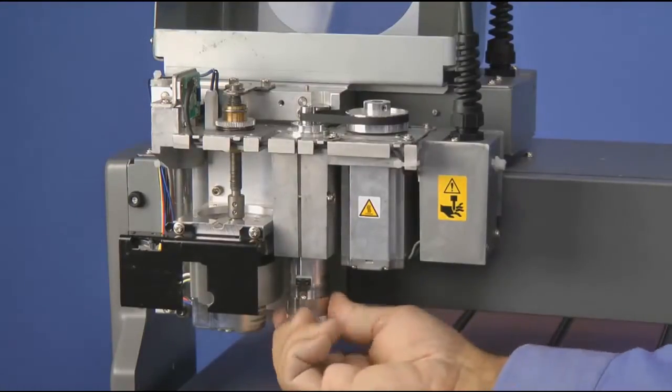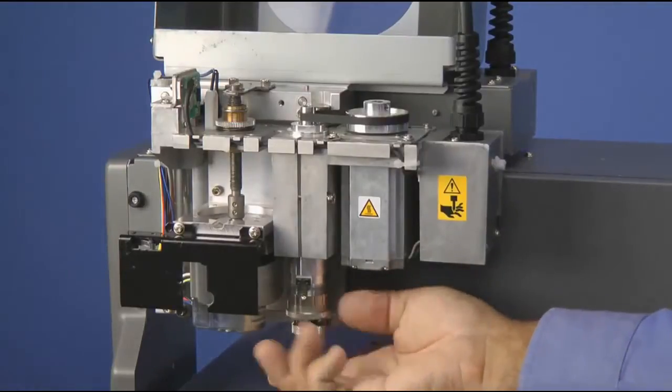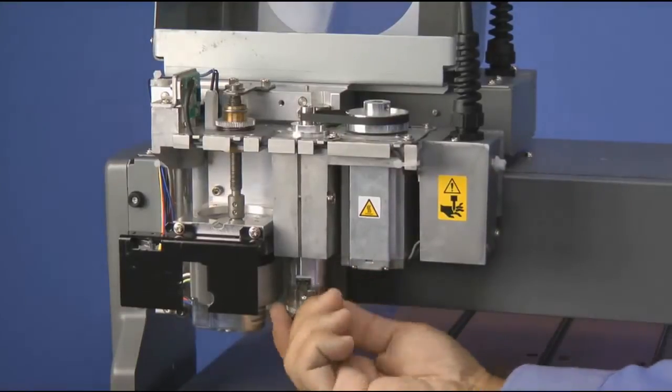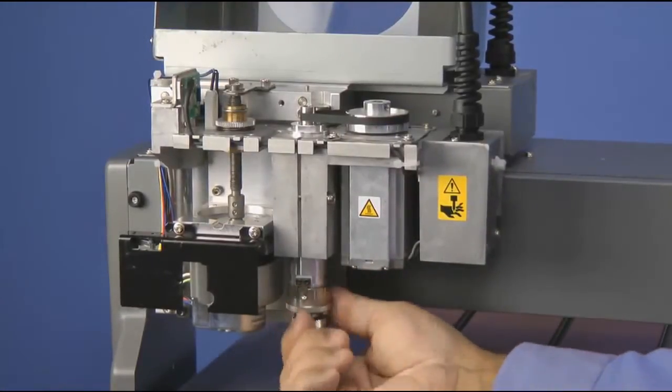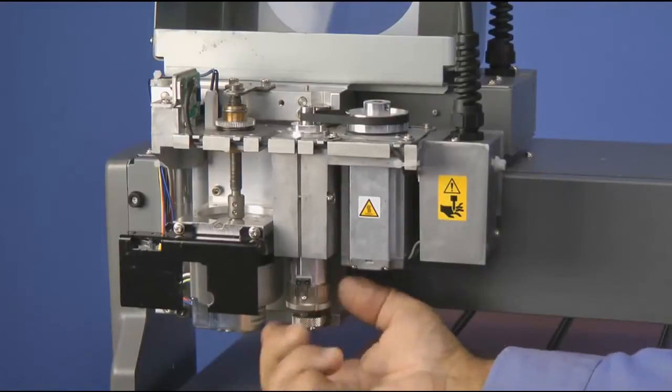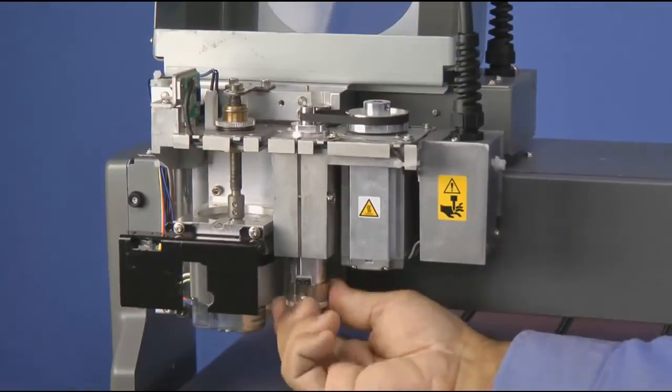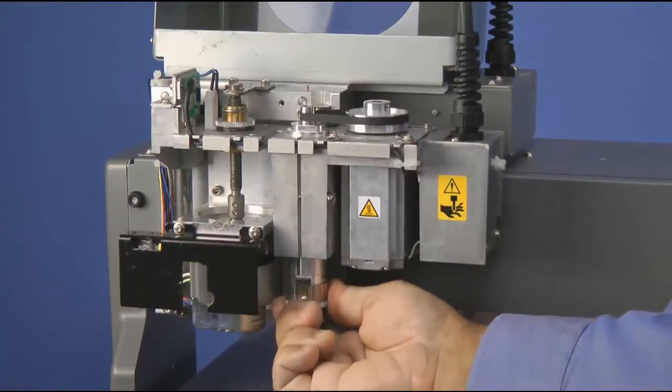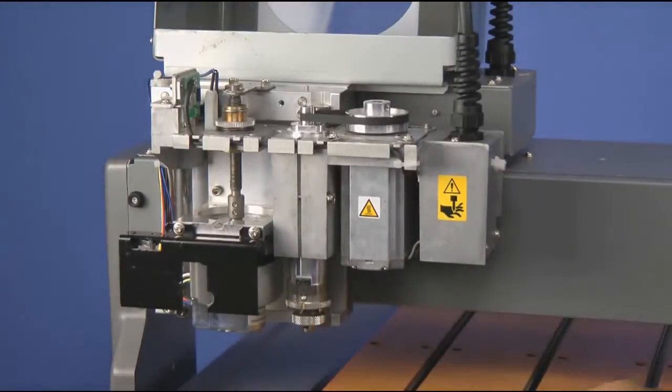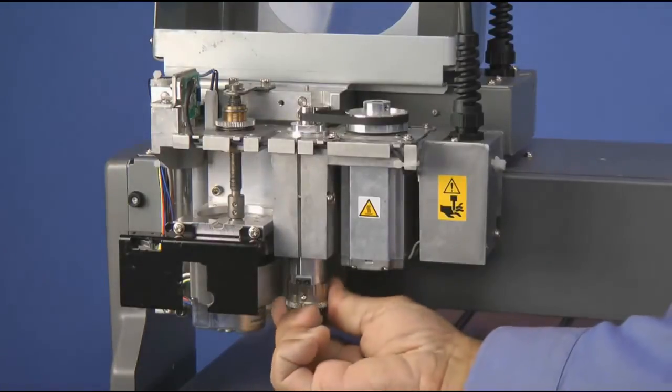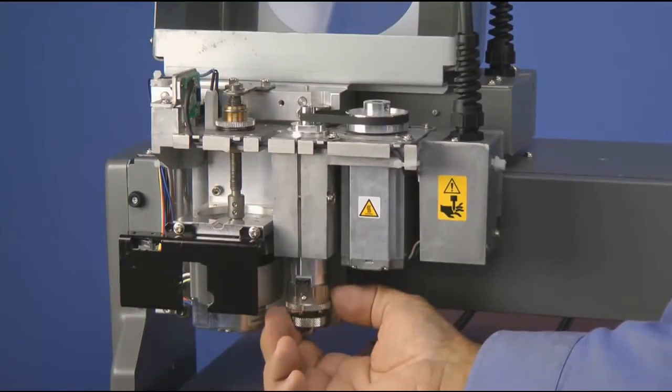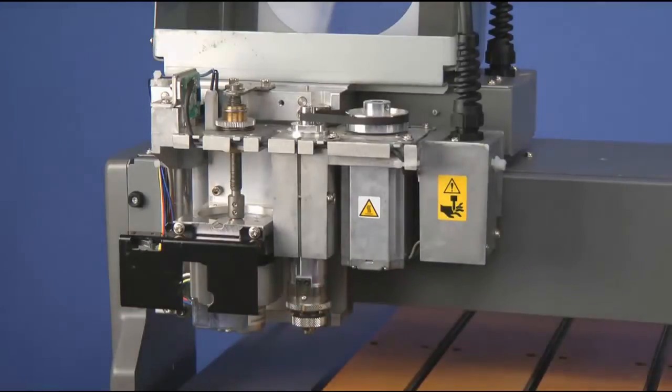At this point, we will take our nose cone and thread it onto the spindle unit. Thread it all the way up until it stops completely. Now, once it stops, back it off to the closest zero position. You want to back it off to the first zero position, and then back it off two additional full turns. This sets our zero position for our nose cone.